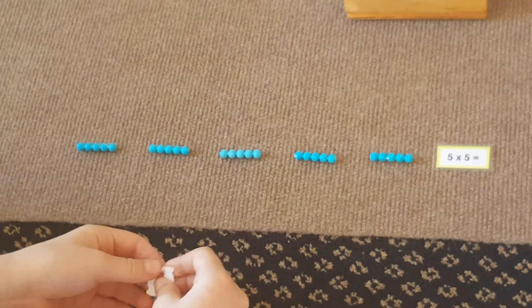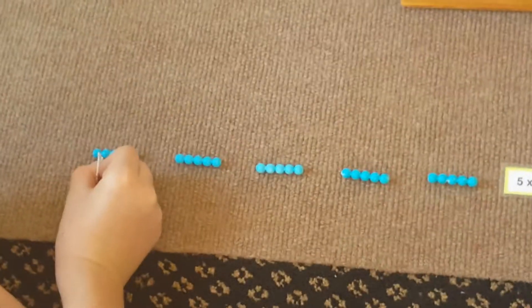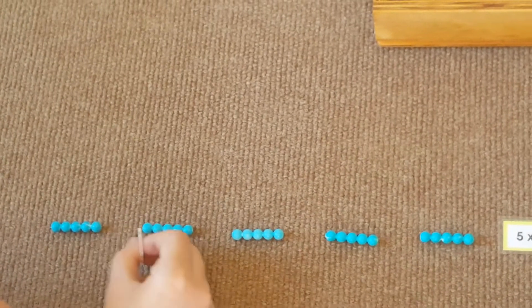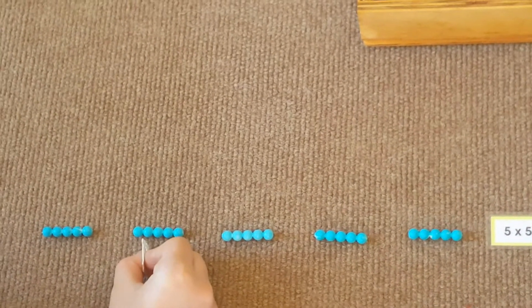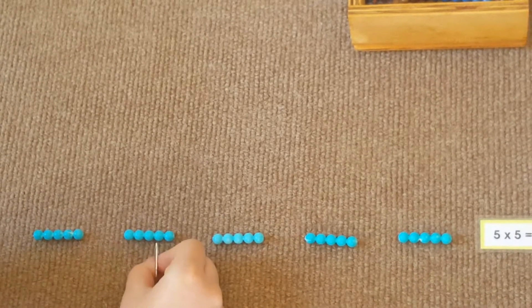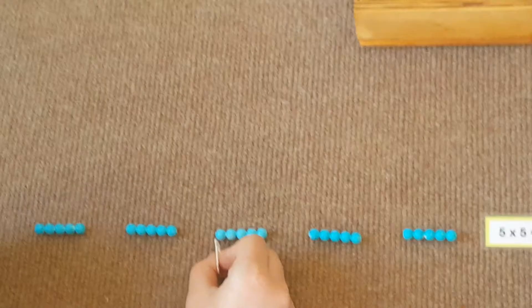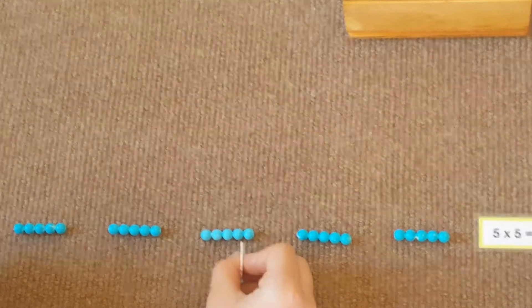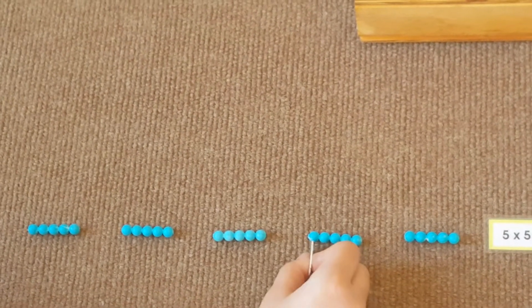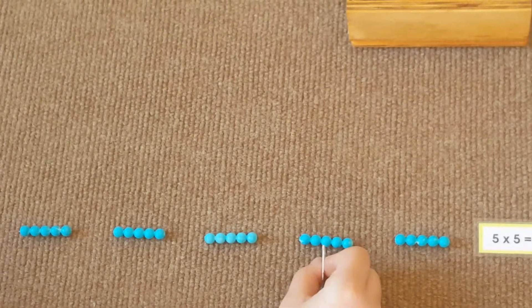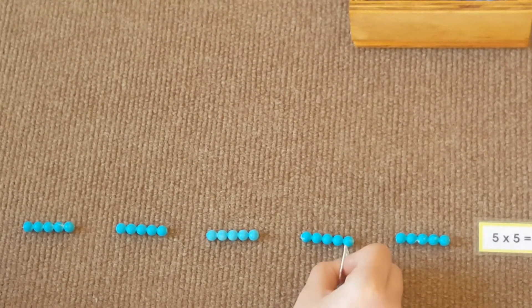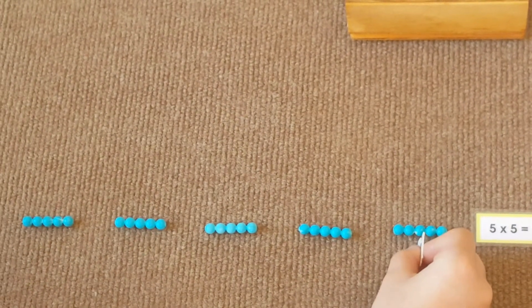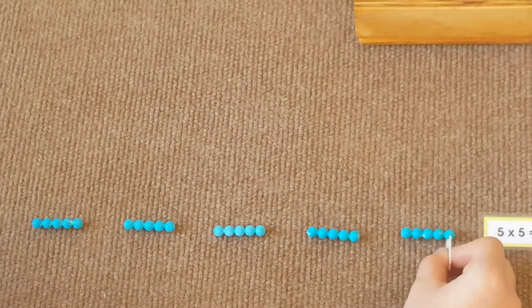Let's count the beads. One, two, three, four, five, six, seven, eight, nine, ten, eleven, twelve, thirteen, fourteen, fifteen, sixteen, seventeen, eighteen, nineteen, twenty, twenty-one, twenty-two, twenty-three, twenty-four, twenty-five.